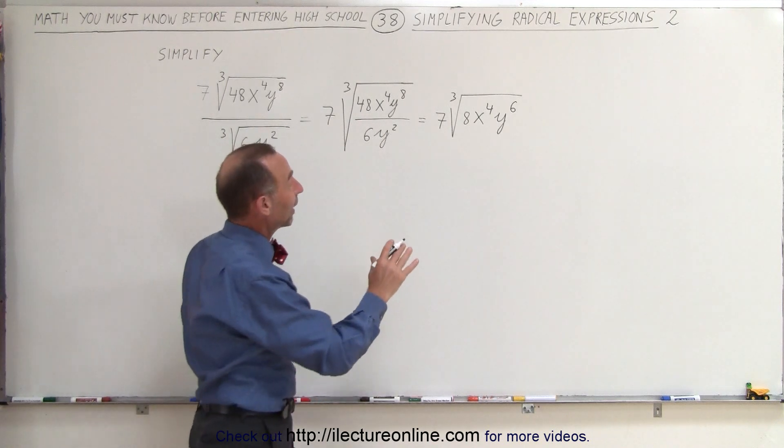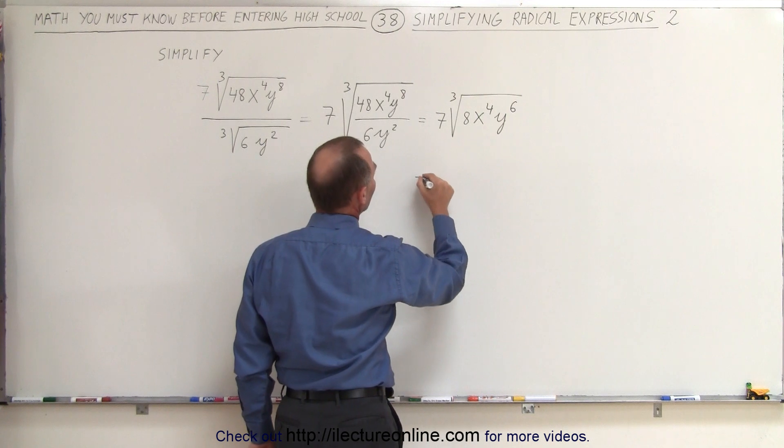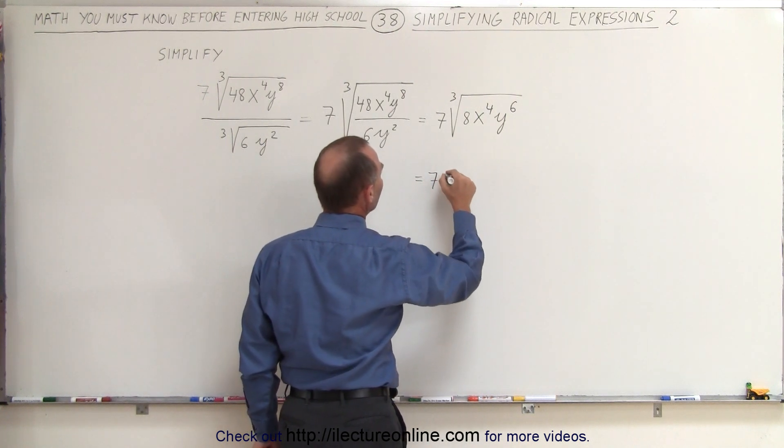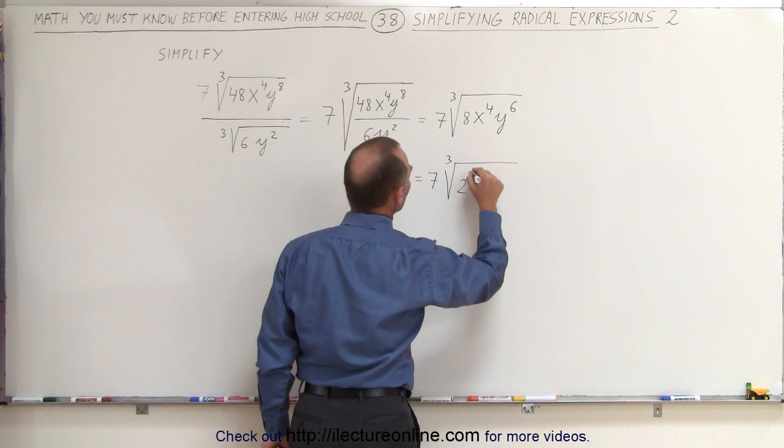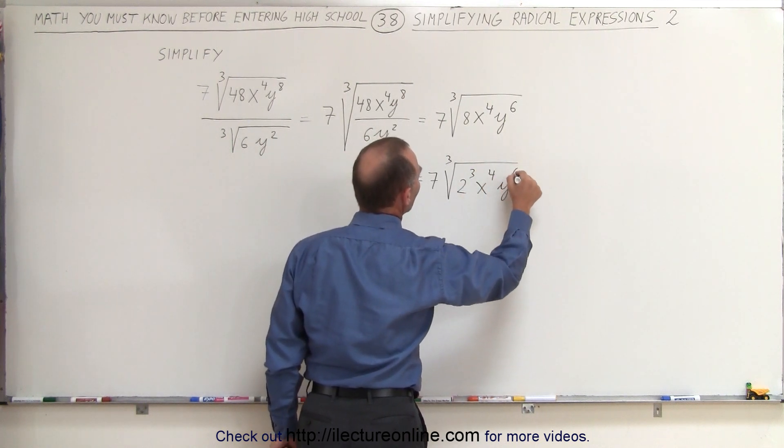Next, what we can do is simplify this. Notice that 8 can be written as 2 cubed. So this is equal to 7 times the cube root of 2 cubed, x to the 4th, y to the 6th.